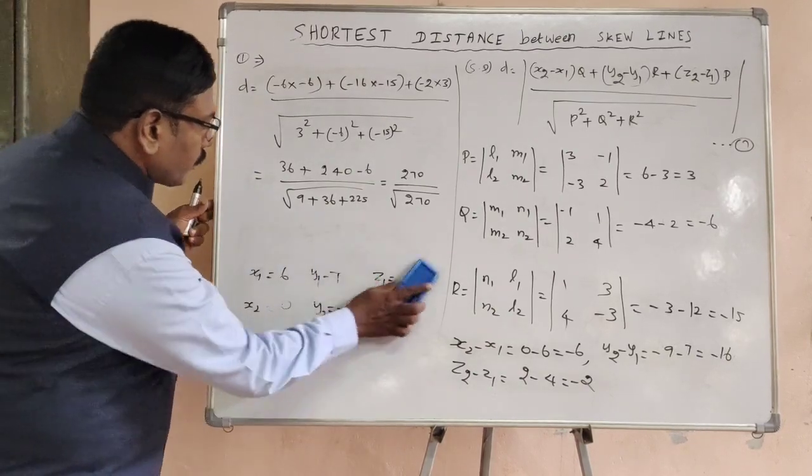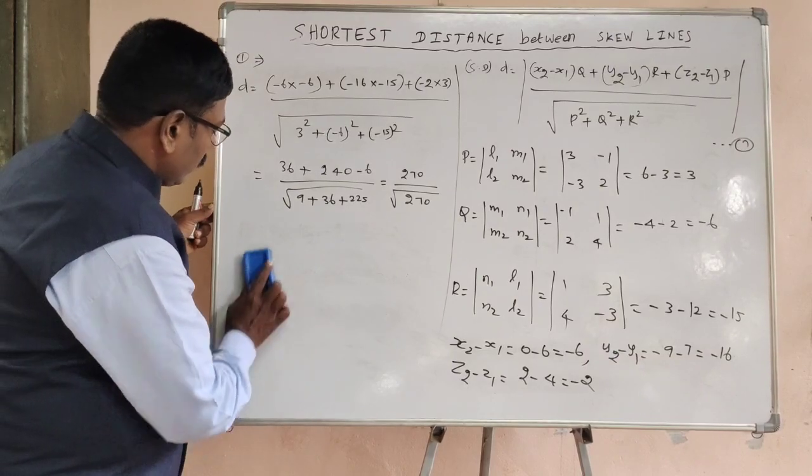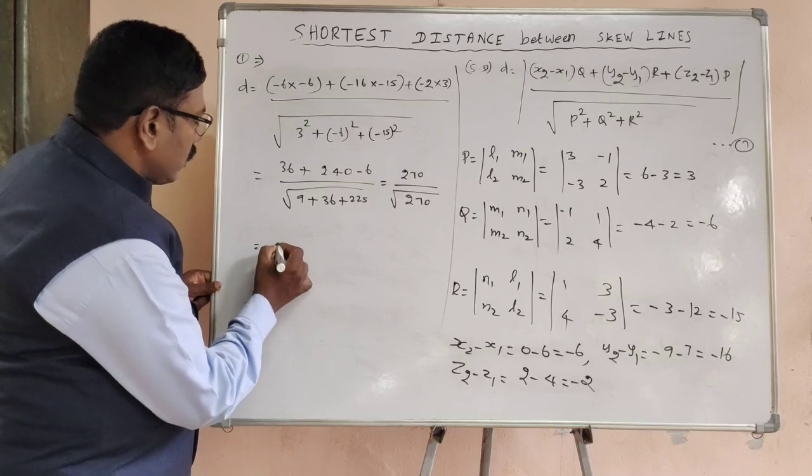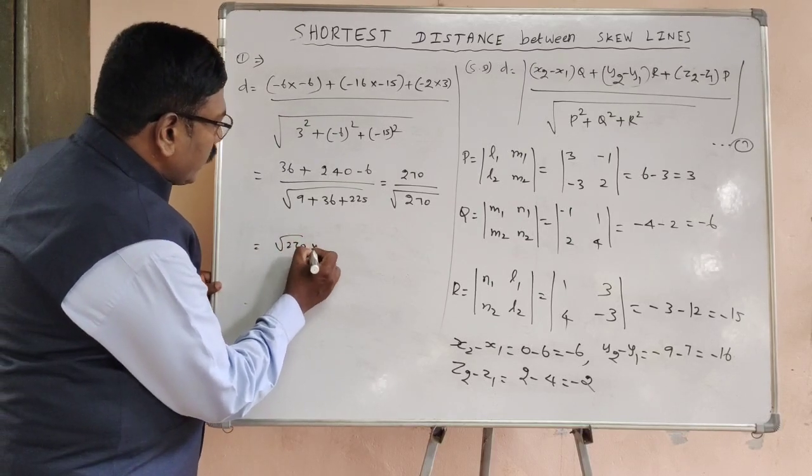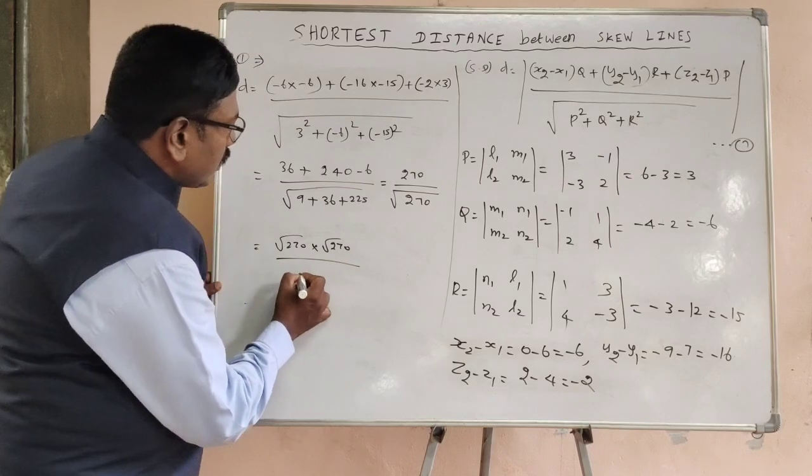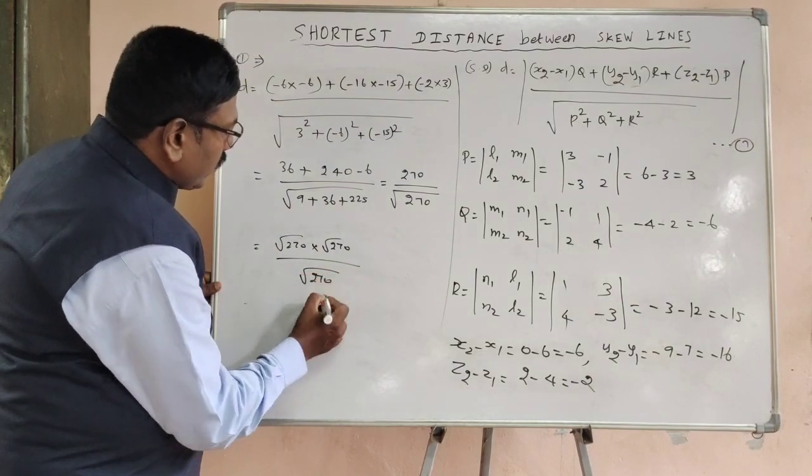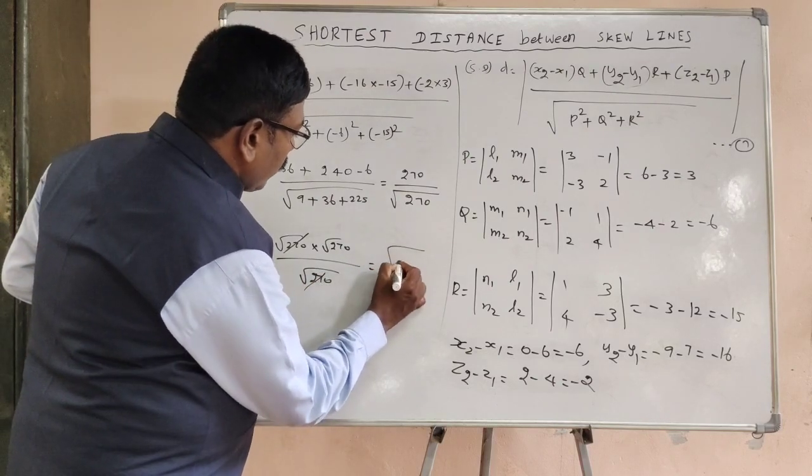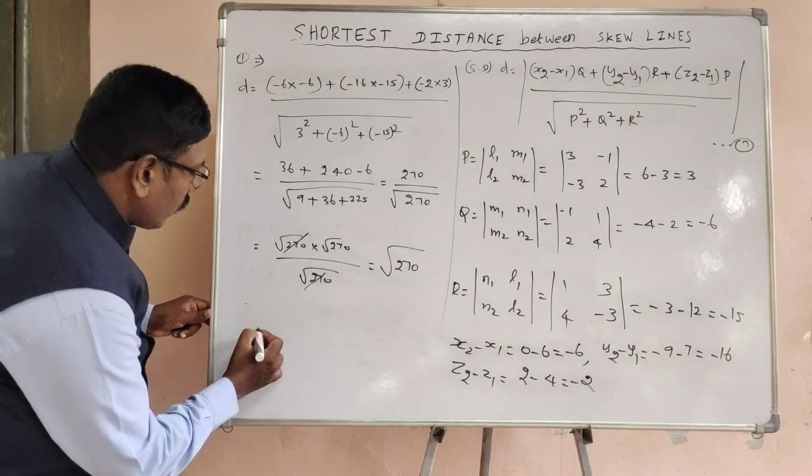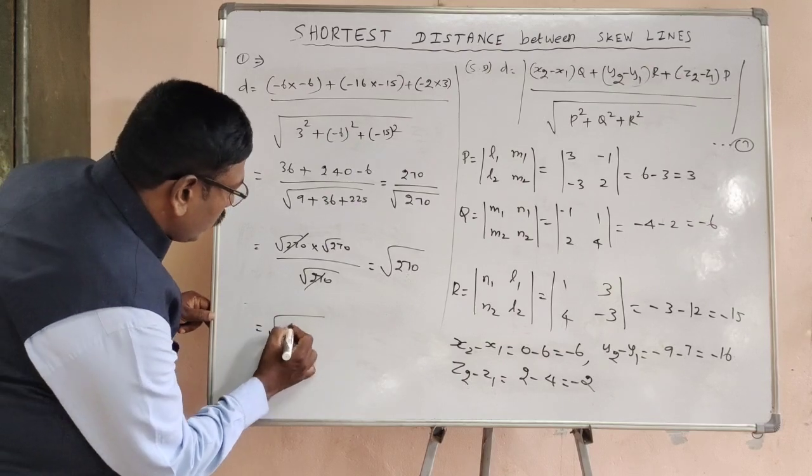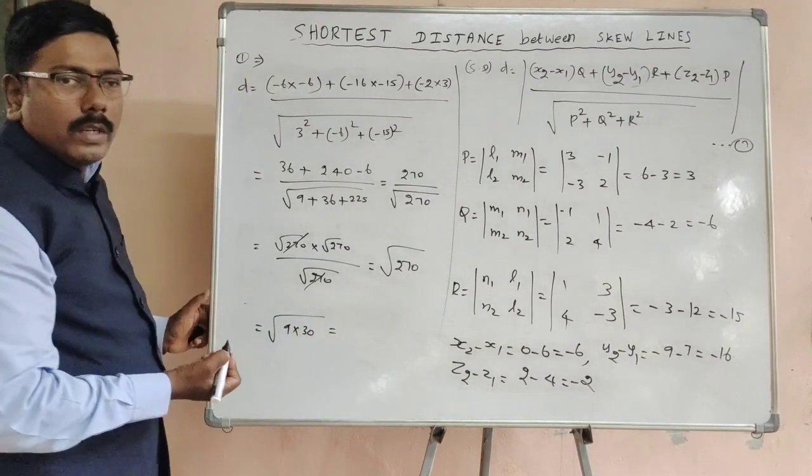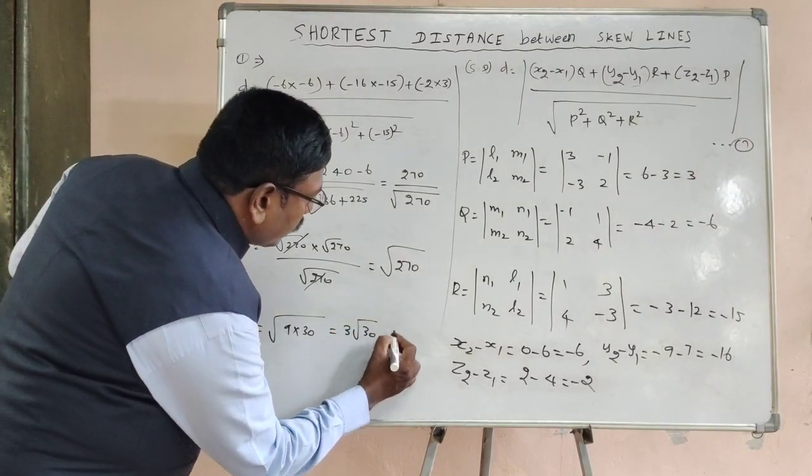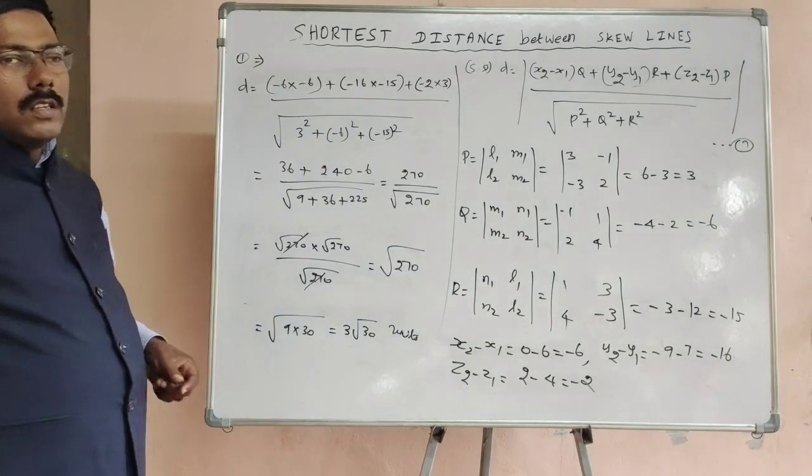You can write root 270 into root 270 divided by root 270. So cut this value root of 270. You can write root of 9 into 30, so root of 9 is 3, so 3 root 30 units. So this is the shortest distance: 3 root 30 units.